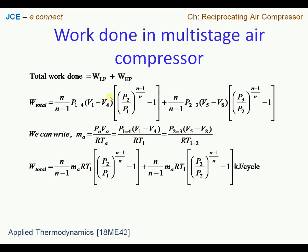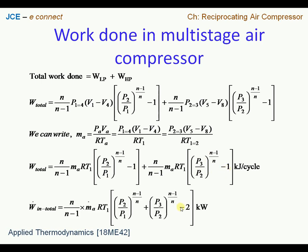Plugging these into the above equation and taking common factors outside — that is n/(n−1)·mRT — one can add the pressure ratios, and the two minus-ones become minus two. The final equation expresses power input, where mass of air is expressed as mass flow rate. Therefore the unit changes from kJ per cycle to kW, so we have W-dot for the compressor.